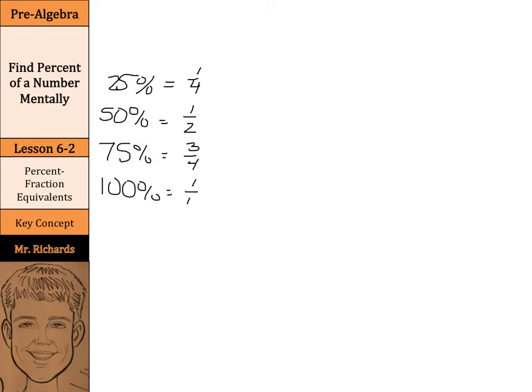The next set, 20 percent, 40 percent, 60 percent, and 80 percent. Now these are our fifths. So 20 percent is one fifth, 40 percent is two fifths, 60 percent is three fifths, and 80 percent is four fifths.